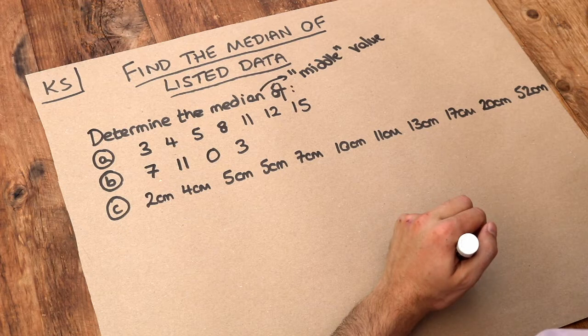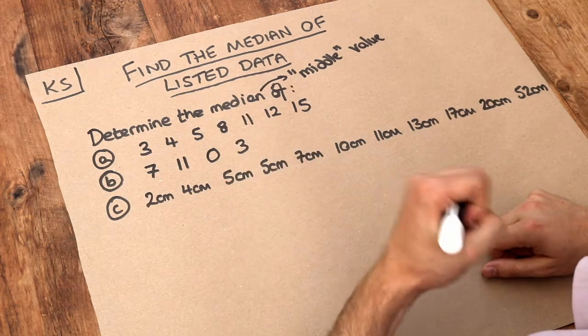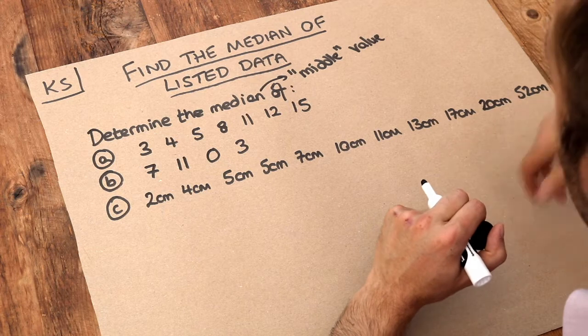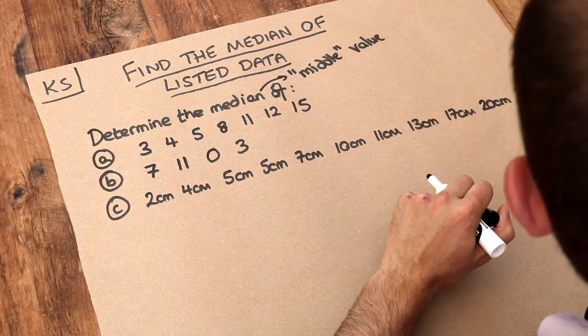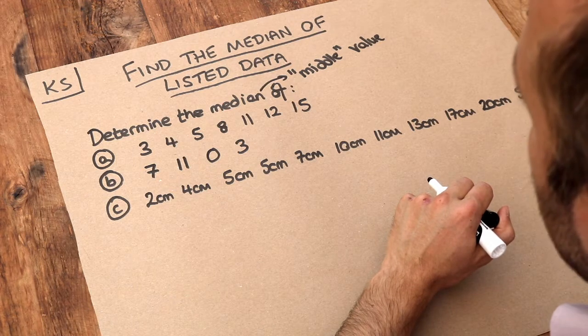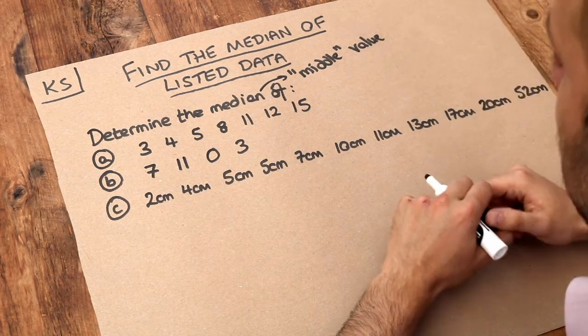An advantage of the median is it's not affected by extreme values, because if you took your average Joe, you look to the middle person, he's not going to be affected by someone earning a super high salary because we're only looking at that middle person's value.